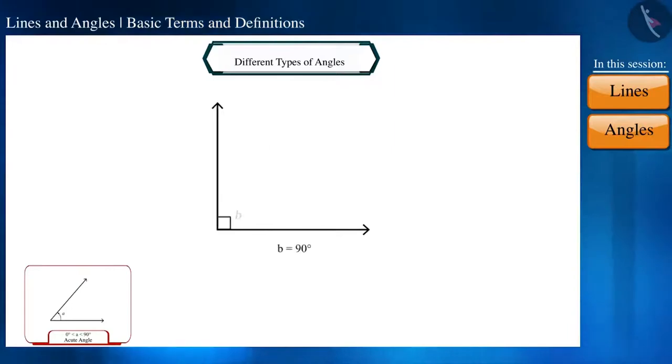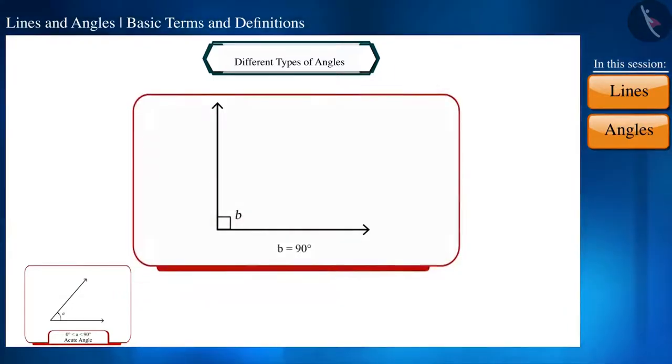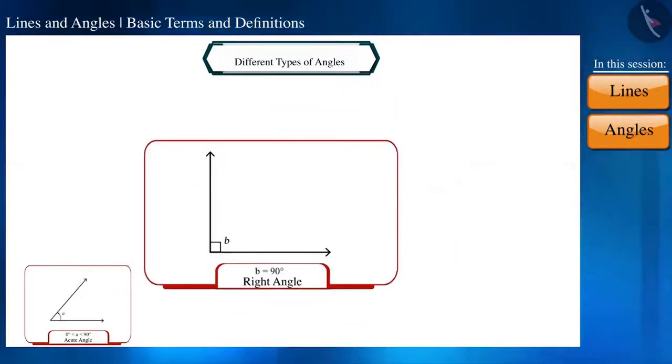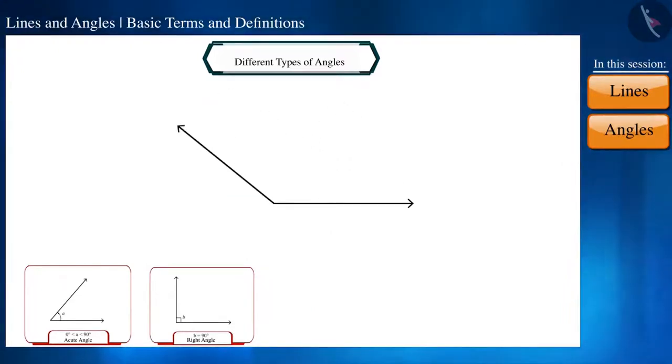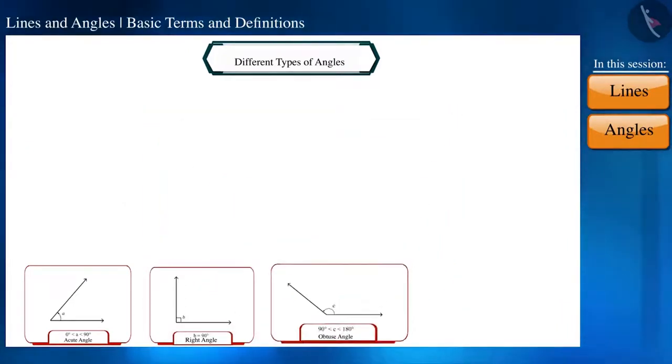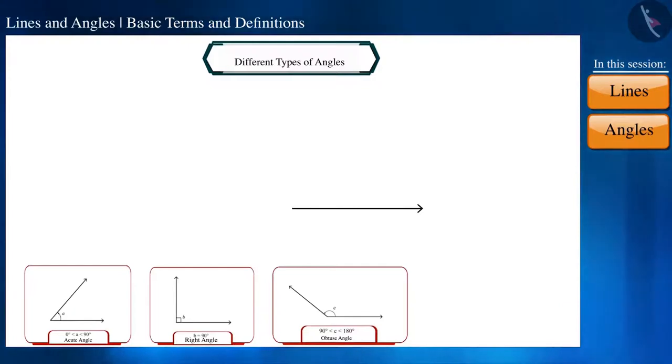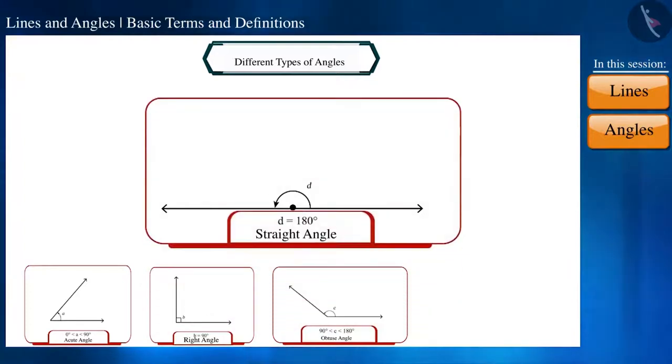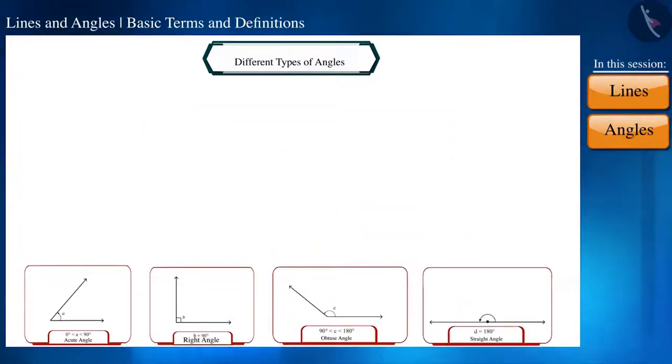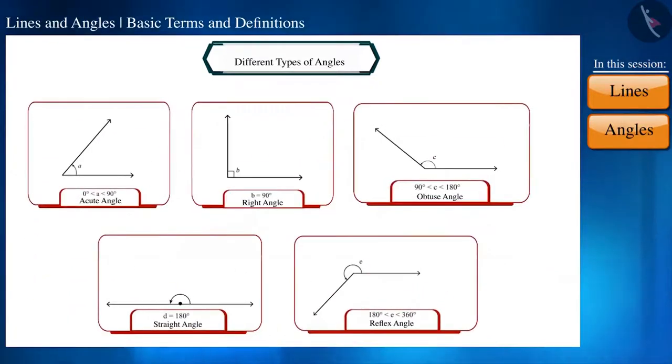If the measure of an angle is more than 90 degrees, but less than 180 degrees, then we call it an obtuse angle. And if the measure of any angle is exactly 180 degrees, then we call it a straight angle. If the measure of any angle is more than 180 degrees but less than 360 degrees then we call it a reflex angle.